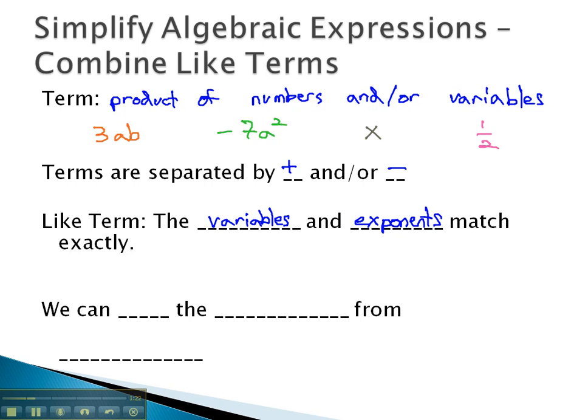What's special when the variables and exponents match exactly? For example, let me show you an example. 3x to the 5th y and negative 4x to the 5th y. In both of these, you'll notice the variable part x to the 5th y matches exactly. That means they are like terms.